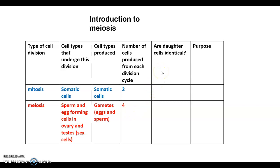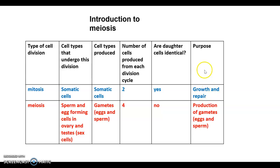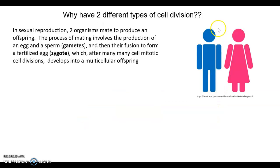Are those daughter cells identical? In mitosis, yes they are. But in meiosis, those four cells are not identical. Finally, the ultimate purpose of these two division processes: mitosis is for growth and repair of the organism, while meiosis is about production of the gametes — it's only for producing eggs and sperm.